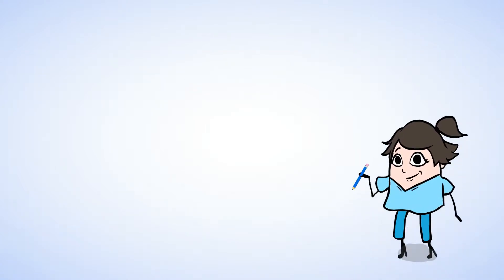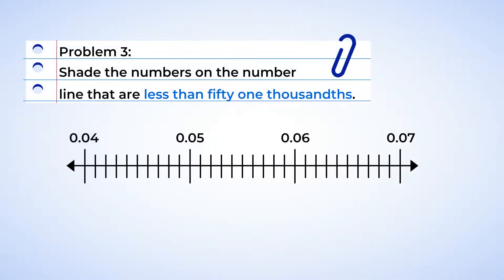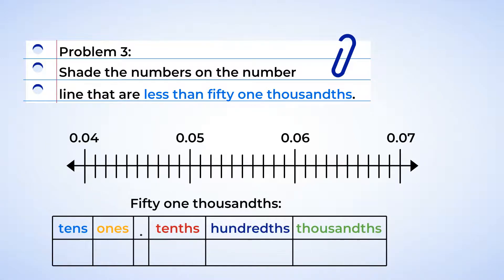Okay, shade the numbers on the number line that are less than fifty-one thousandths. All right. First, let's find out where fifty-one thousandths is on the number line. Now as a decimal, fifty-one thousandths has one in the thousandths place, five in the hundredths place, and zero in the tenths place. And it looks like zero point zero five one.